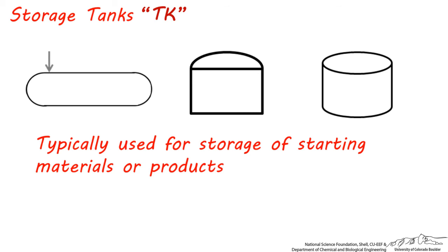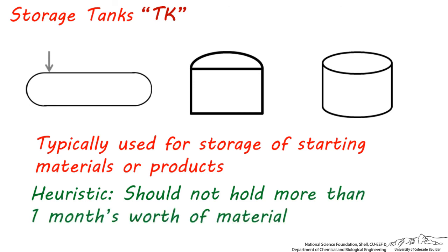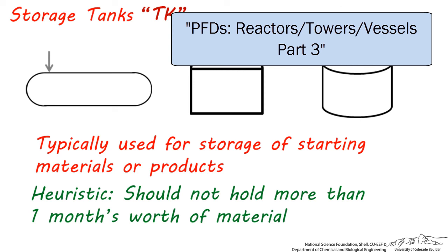As a general rule of thumb, these should hold no more than one month's worth of material. You might see any one of these variations on a process flow diagram. You might notice that these symbols do accurately represent what storage tanks might look like in a plant.